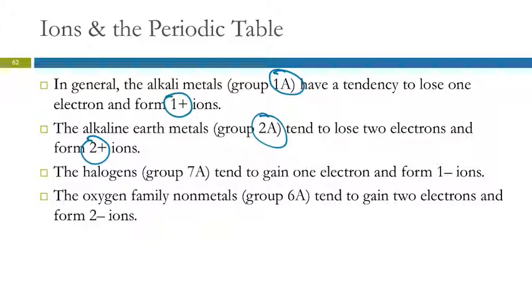In the non-metals, group 7A, they form a negative one. That's because they're going to gain one electron. The nearest noble gas is going to have eight. One way to predict the charges is the group number minus eight will give you the charge on the non-metal.